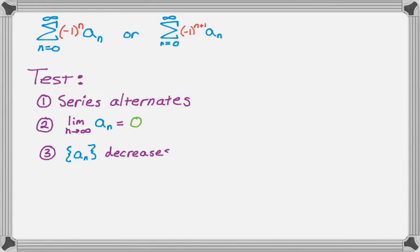Then the next thing, the third thing, is that the terms of a sub n, so that's the absolute value part or the way I wrote it just a sub n, they must decrease. And really what that means is they must decrease eventually, because if it's doing some weird stuff for the first 10 terms or 20 or even 1000 terms it doesn't really matter. If eventually it decreases we can use the test.